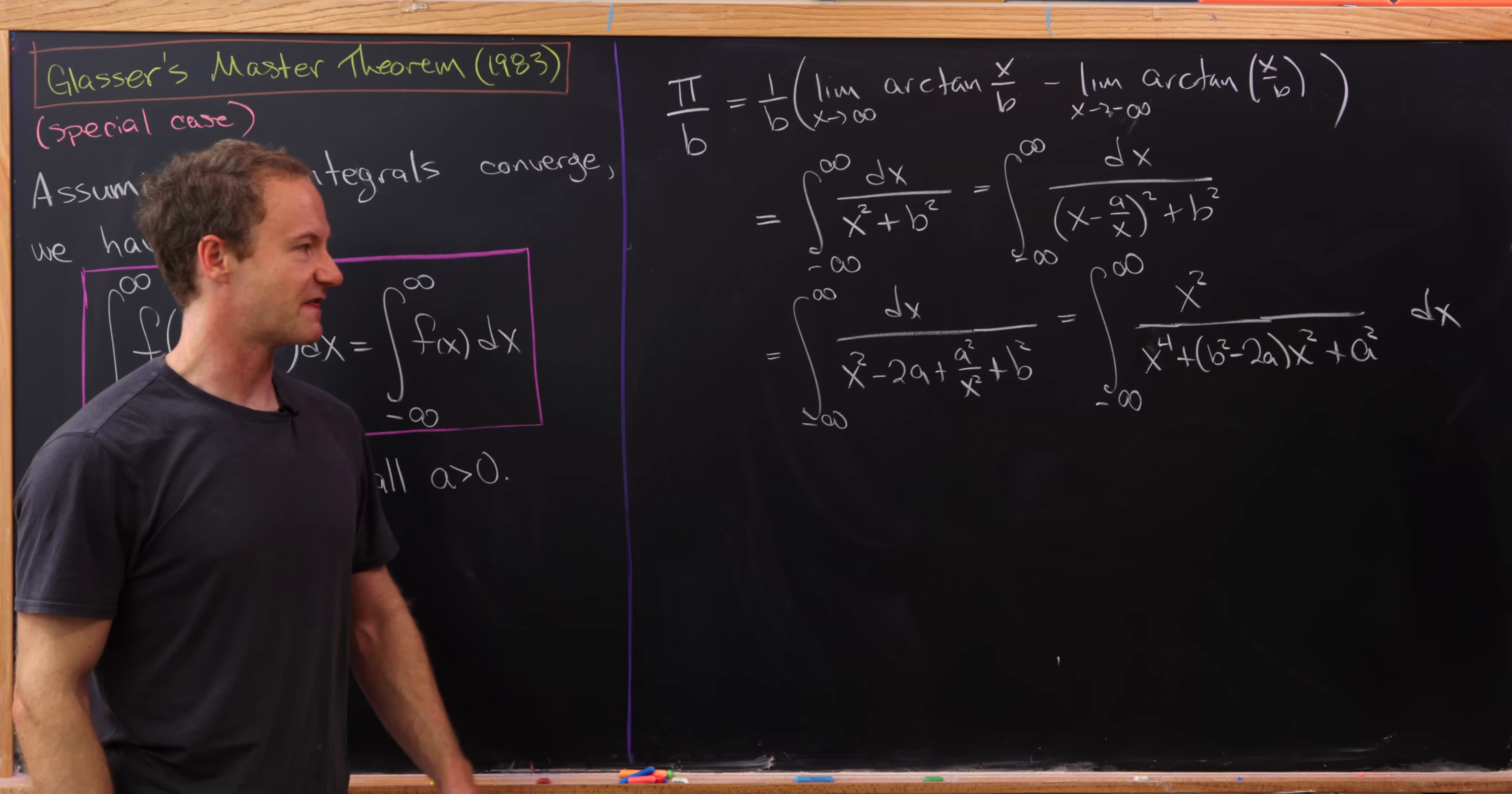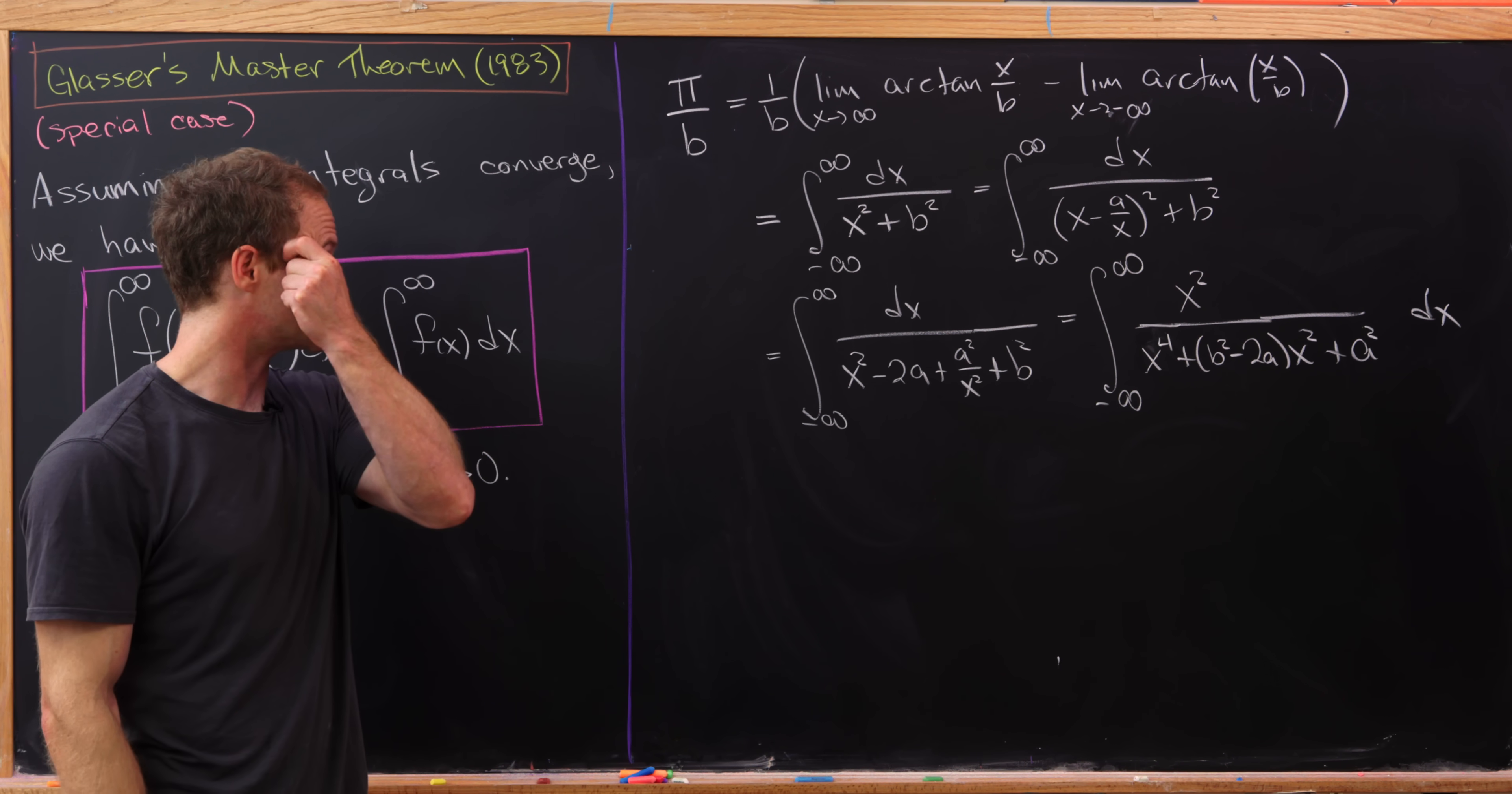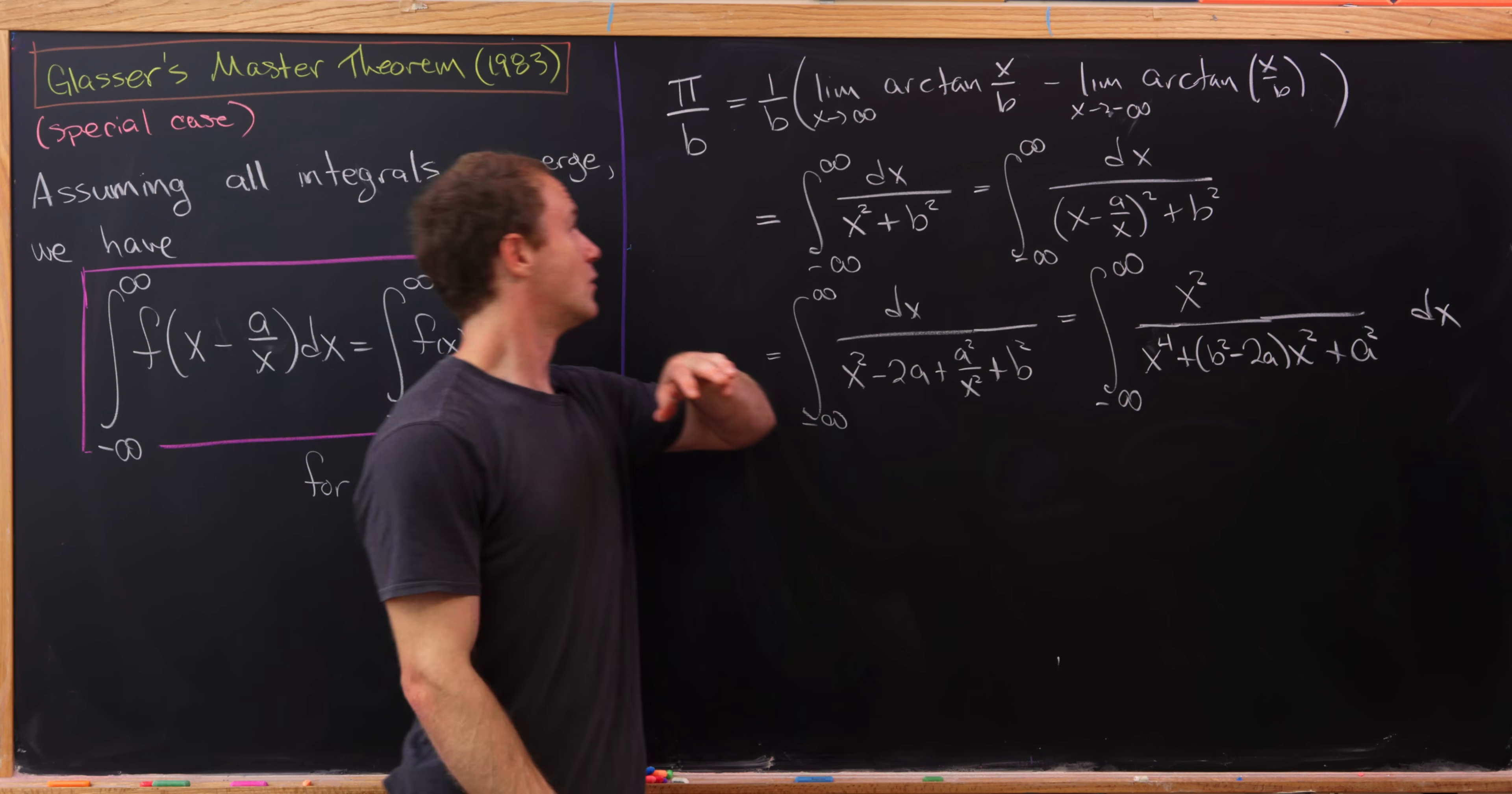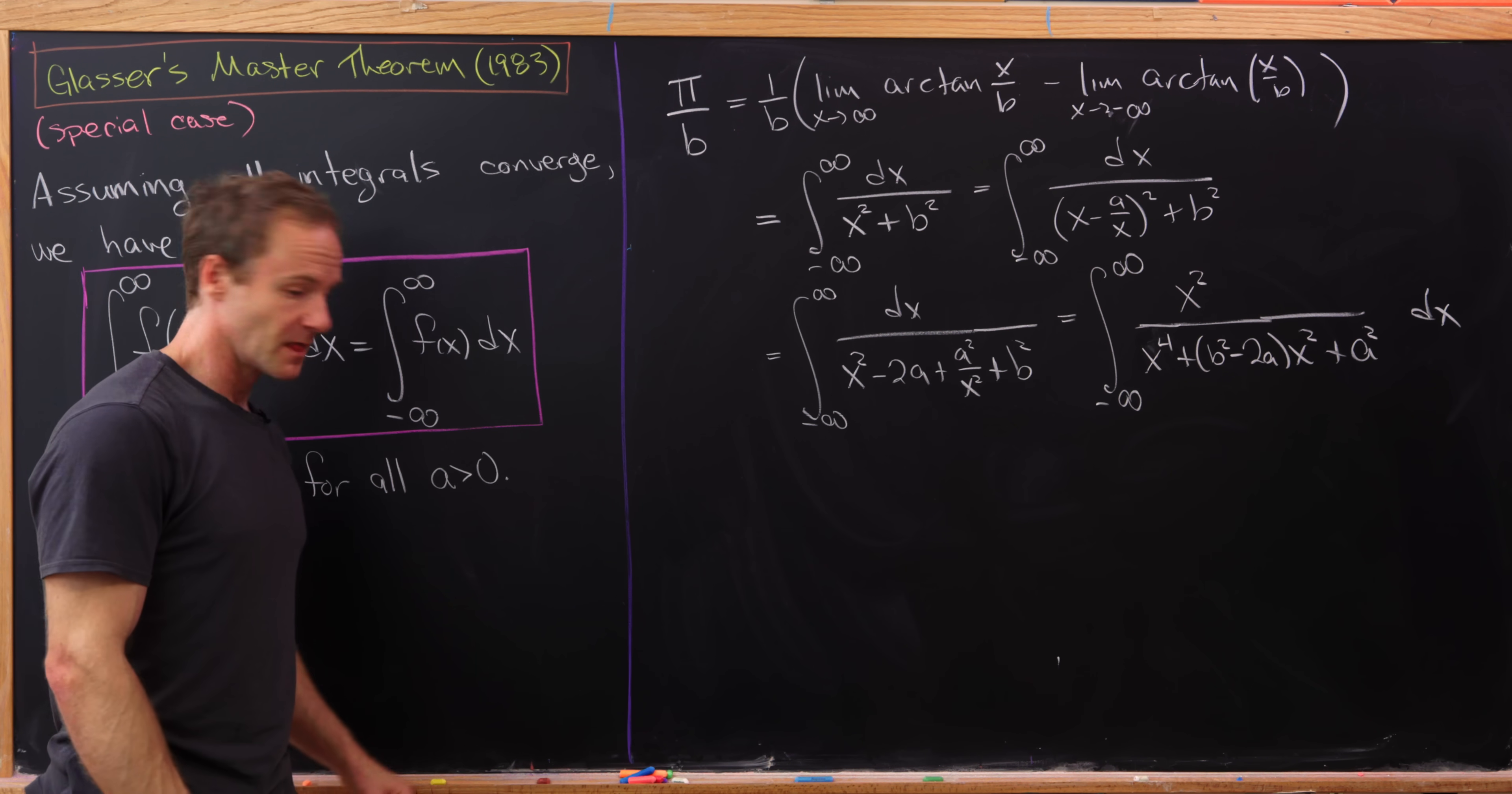And like I said before, this holds for all positive values of a. So for all positive values of a, we get this integral over here is equal to pi over b.